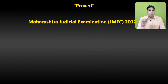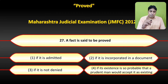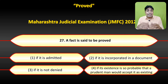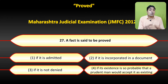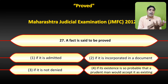The examiner asked a question on this. Maharashtra judicial examination mein, JMFC mein 2012 mein question poocha gaya tha: 'A fact is said to be proved' — kab fact ko proved maana jaayega? The options were: first, if it is admitted; second, if it is incorporated in a document; third, if it is not denied; fourth, if its existence is so probable that a prudent man would accept it as existence. Jo normal person ko poocha jaaye ya uske saamne wo fact rakha jaaye, to wo kahega haan, yeh cheez hai.